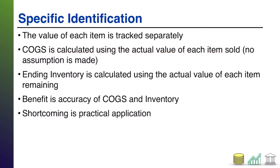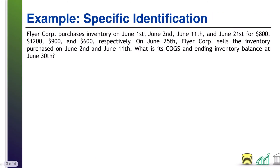With that said, when you need to calculate cost of goods sold, there are no assumptions needed under this method — you know what sold and you know what it cost. When you need to figure out the ending balance of your inventory for the balance sheet, there are no assumptions necessary; you know exactly what's left and its exact value. This is a very accurate, though cumbersome, system.